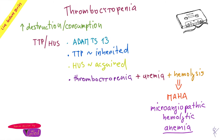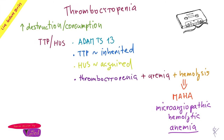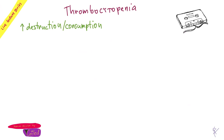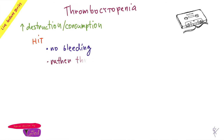So: ITP and TTP bleed. ITP — platelets are destroyed right away. TTP — consumes the platelets by clotting and then you bleed. And HIT — you only clot. HIT means it's a thrombophilic state. What is HIT? It's an autoimmune reaction — sort of an allergy to heparin.